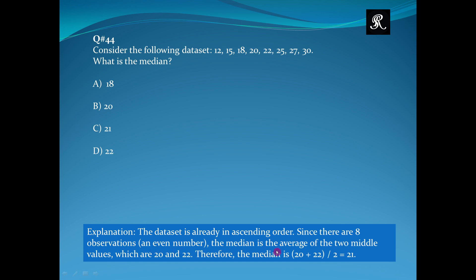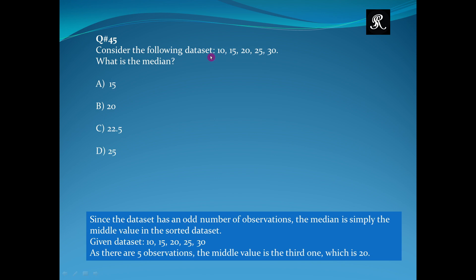Since there are eight observations, that is an even number, the median is the average of the two middle values, which are 20 and 22. The median is the sum of those divided by two, which equals 21. So the right option is option C.